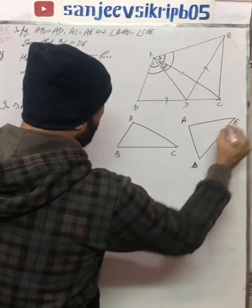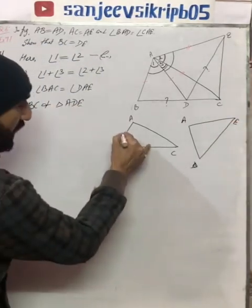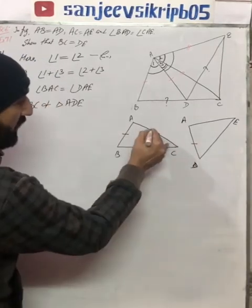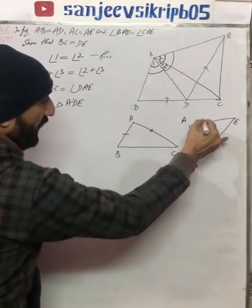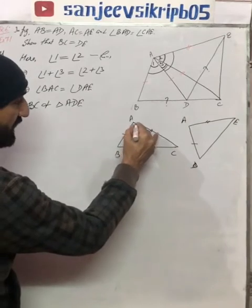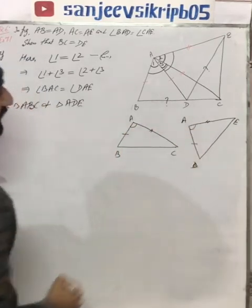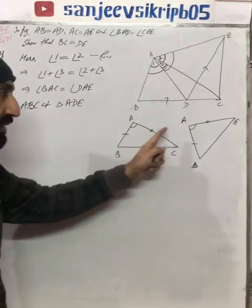Now, if we look at these two triangles, AB is equal to AD, AC is equal to AE, and the angle BAC is equal to DAE. So that means the two triangles are congruent.